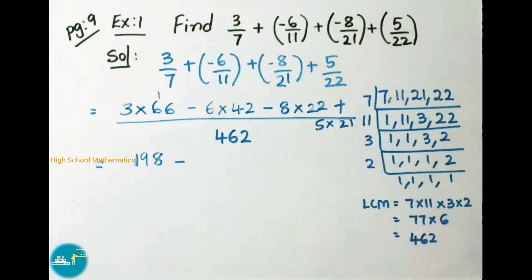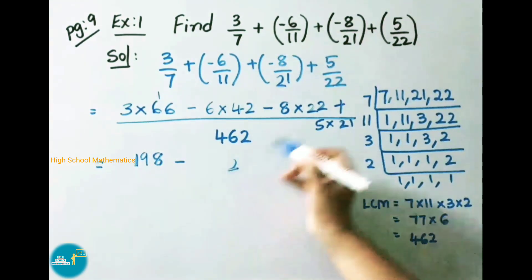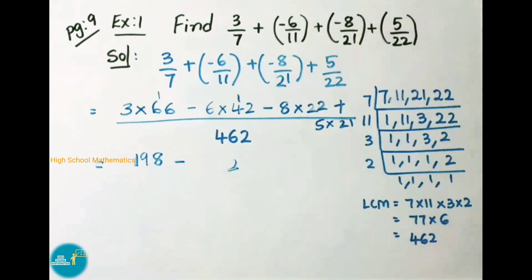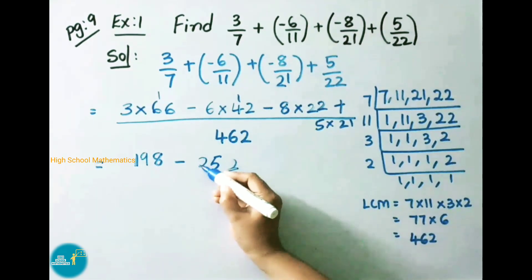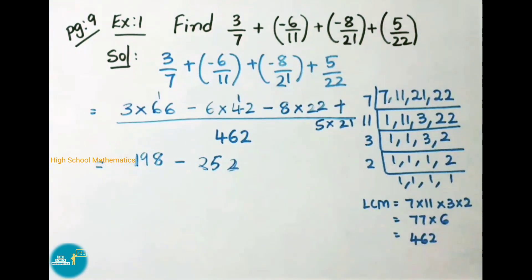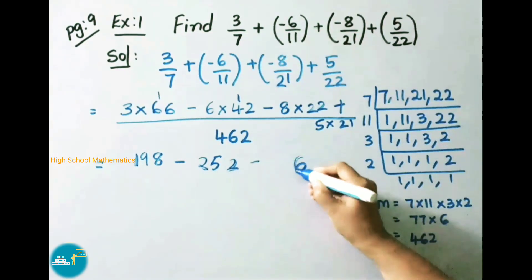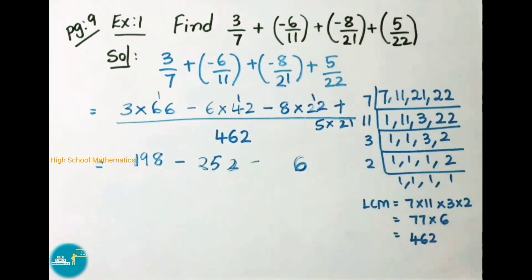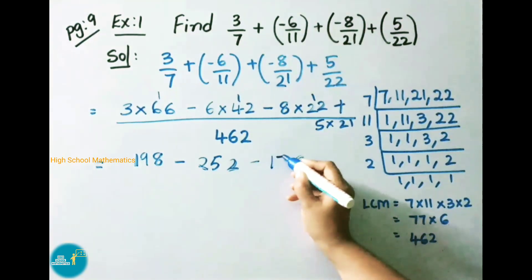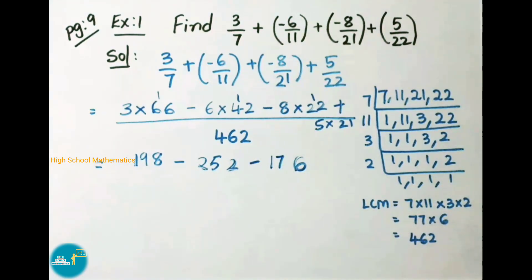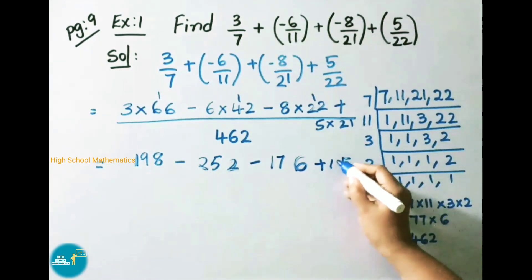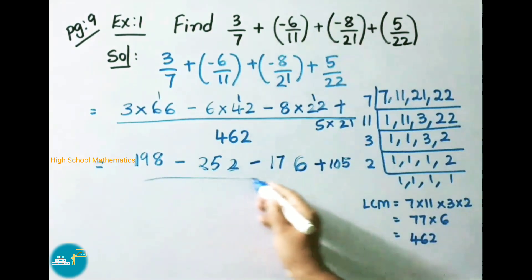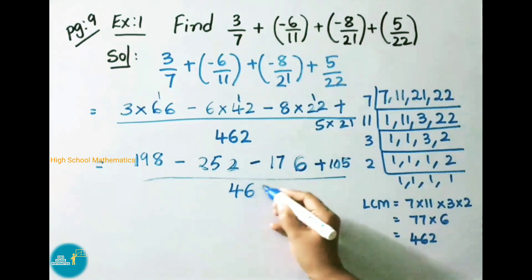Write down minus 6 into 42. 6 twos are 12, write down 2 carry 1; 6 fours are 24 plus 1 is 25. So 6 into 42 is 252. Next write down minus 8 into 22. 8 twos are 16, so 6 carry 1; again 8 twos are 16 plus 1 is 17. So 8 into 22 is 176. Plus 5 into 21: 5 ones are 5, 5 twos are 10, so 5 into 21 is 105. Write down denominator 462.